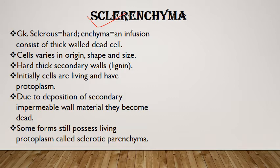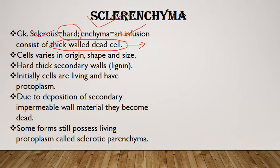The next tissue is sclerenchyma. 'Scleros' in Greek means hard, 'enchyma' means infusion — so 'hard infusion.' It is made up of thick-walled dead cells. However, they are not dead from the initial stage — when young, sclerenchyma cells are living with protoplasm and a well-defined nucleus. As they grow, the protoplast deteriorates due to deposition of secondary wall thickenings, and the cells become dead at maturity. The shape, origin, and size vary — they are not uniform.